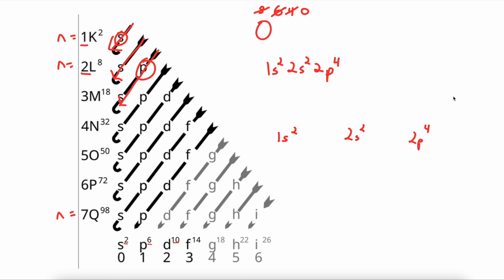The S sublevel can hold a max of 2 electrons. And because each orbital holds 2 electrons, we only draw 1 orbital for the S sublevel. Again, this is an S sublevel, which holds a max of 2 electrons. So we draw 1 orbital, because each orbital can hold 2 electrons.